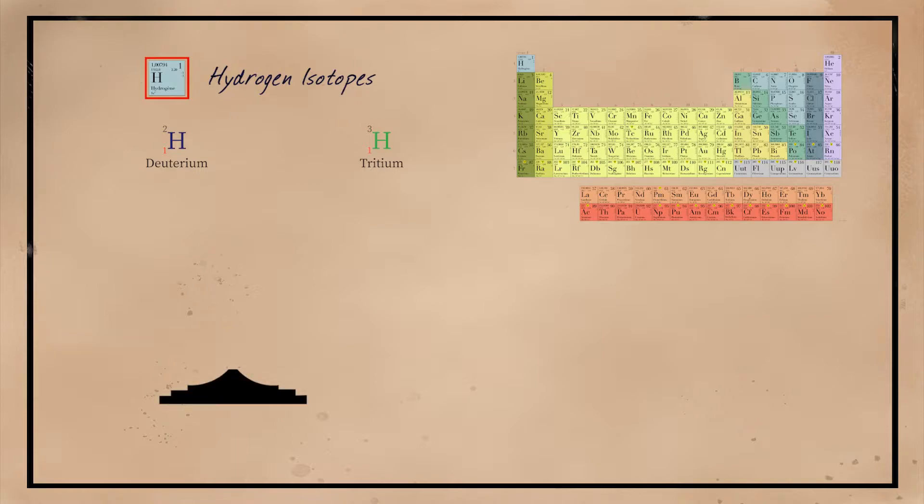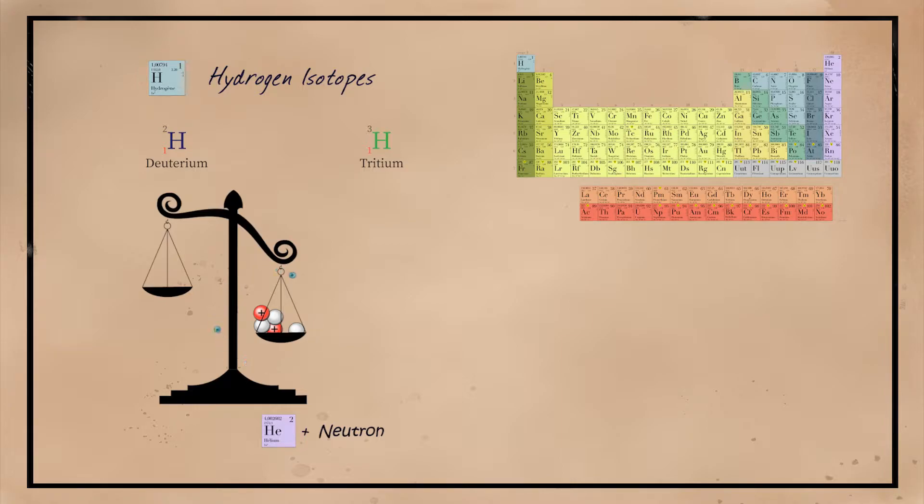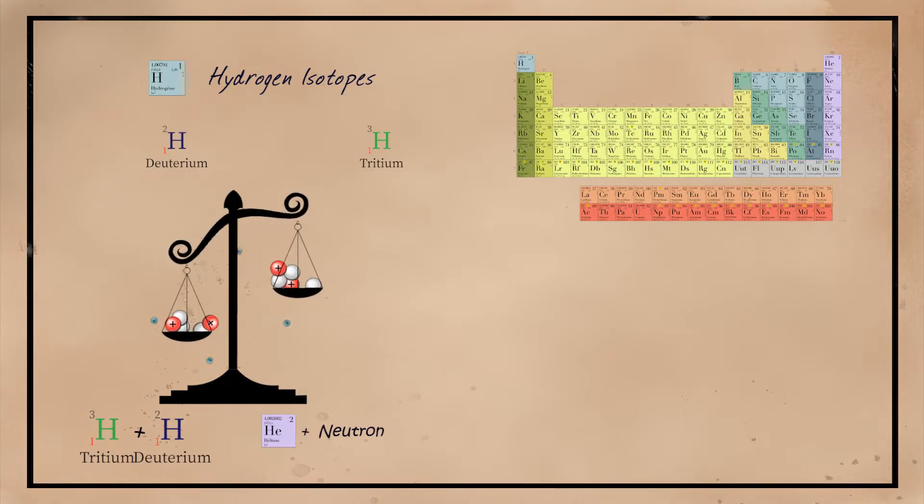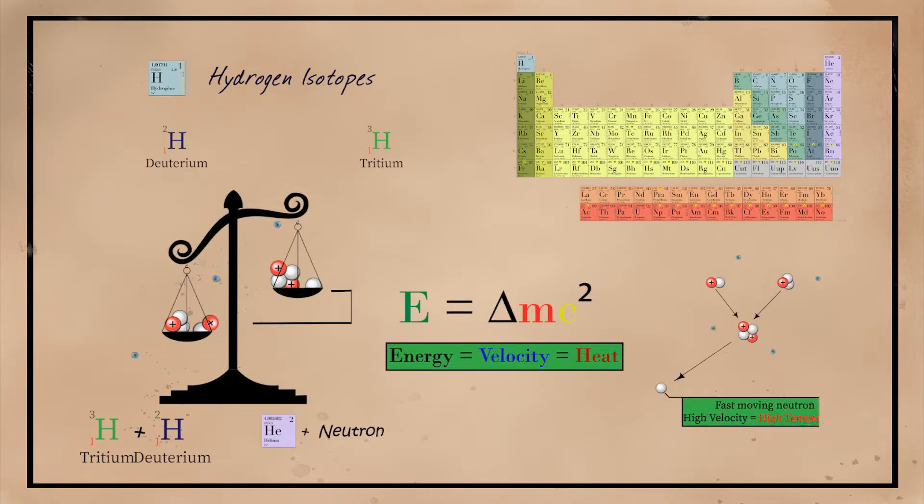If we compare the mass of these two heavy hydrogen isotopes to the mass of the products—helium or alpha particle and a high-energy neutron—we can notice that the mass of the reactants is more than the mass of the products. Since the products are less massive, Einstein explains with his famous E equals mc squared that the mass difference must be released in a different form of energy, in this case velocity or heat, and that's the limitless energy that scientists are trying to harness.